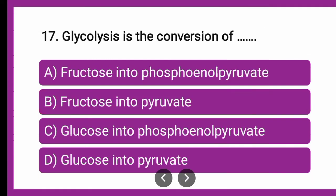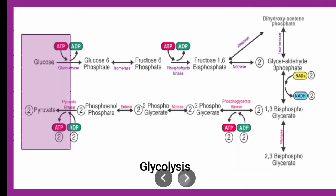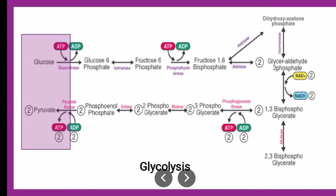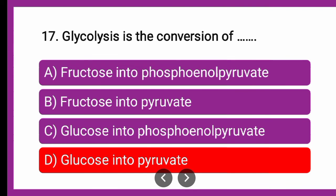Next question: Glycolysis is the conversion of — whether it is conversion of fructose into phosphoenol pyruvate, fructose into pyruvate, glucose into phosphoenol pyruvate, or glucose into pyruvate? You can put your answers in the comment box first. The correct answer is glucose into pyruvate. Various intermediate processes are involved and after those inter-conversions pyruvate is formed, which is nothing but glycolysis.